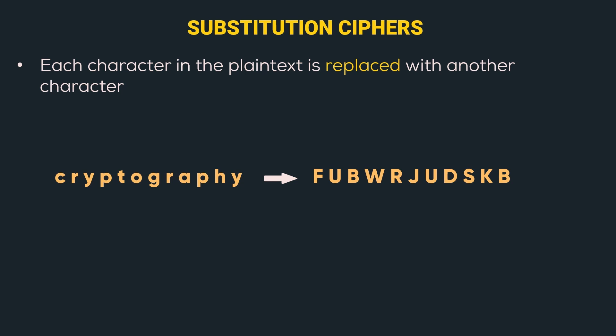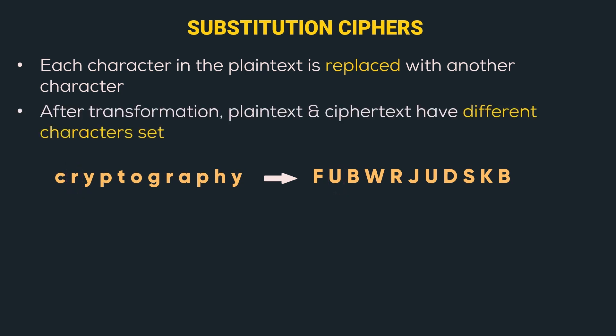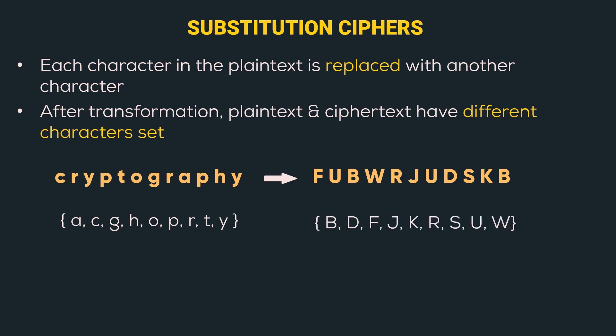Coming back to the topic — here, the first letter 'c' in the plaintext is replaced by the letter 'F' in the ciphertext. Similarly, the second letter 'r' is replaced by the letter 'U' in the ciphertext. And similarly, all other alphabets in the plaintext are replaced by another alphabet in the ciphertext. After transformation, plaintext and ciphertext have different character sets. We can see that they are not equal, so the character set is changed in substitution cipher.